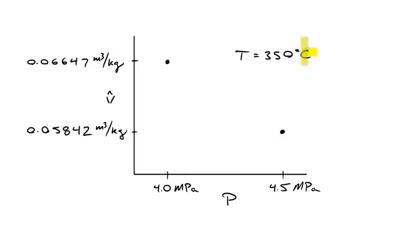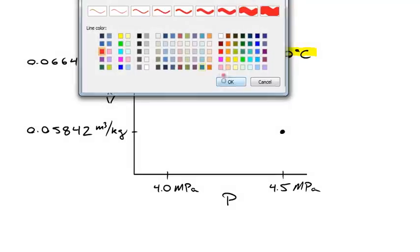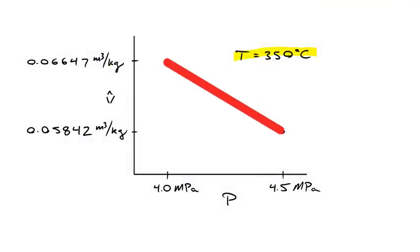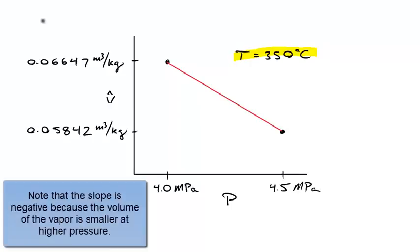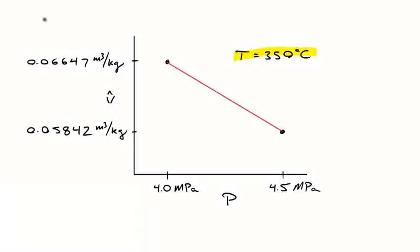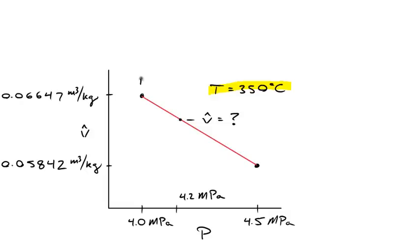Here's a graphical depiction of what we're doing. At 350 degrees C there are two data points taken from the table. At 4 megapascal, here's the specific volume; at 4.5 megapascal, here's the specific volume. We assume a linear relationship between these two points and connect them with a line. The pressure we're interested in is 4.2 megapascal. Note the slope is negative — increasing pressure decreases specific volume, which makes sense for a vapor.